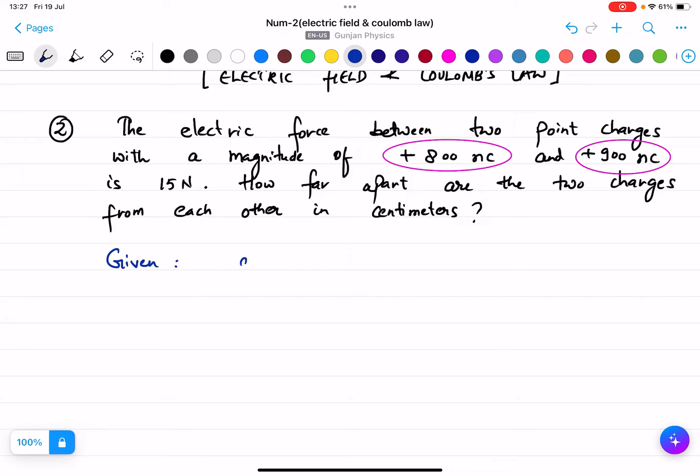What is given to us? Two charges: Q1, 800 nanocoulomb, Q2, 900 nanocoulomb, and force is given to us, 15 newtons.